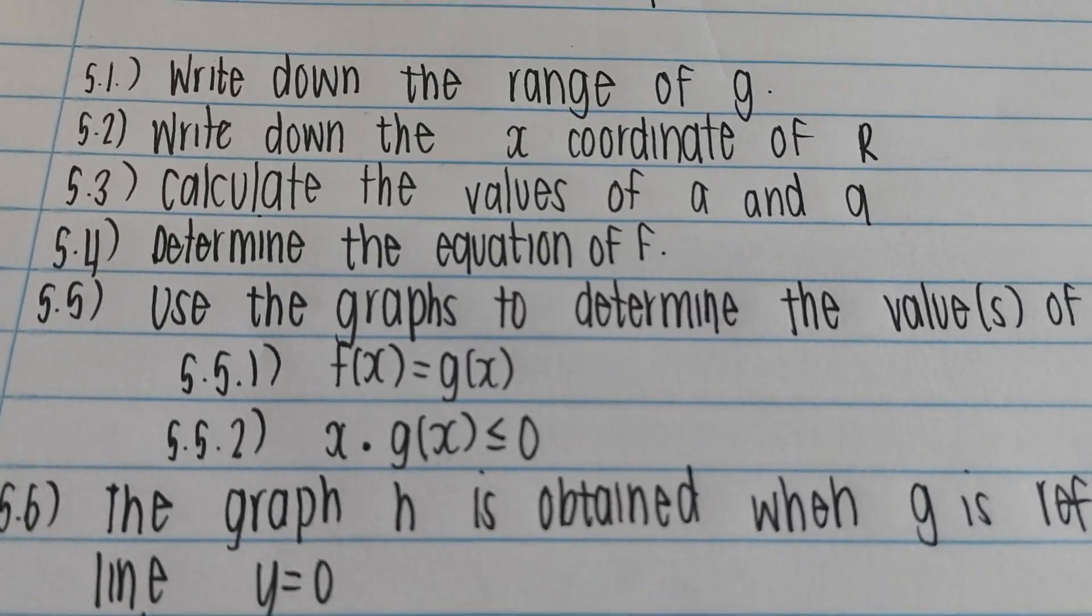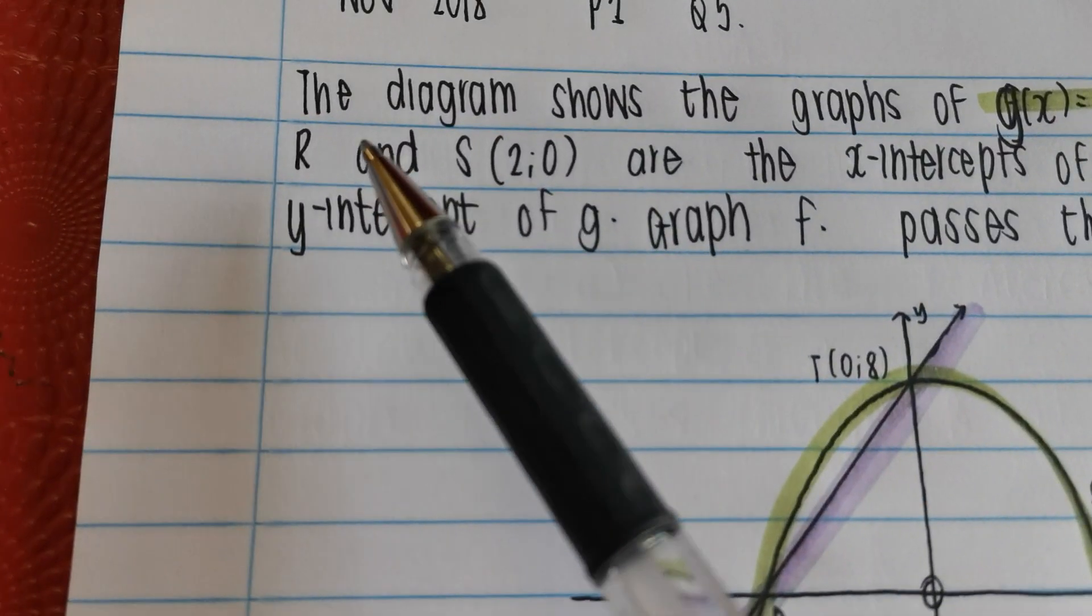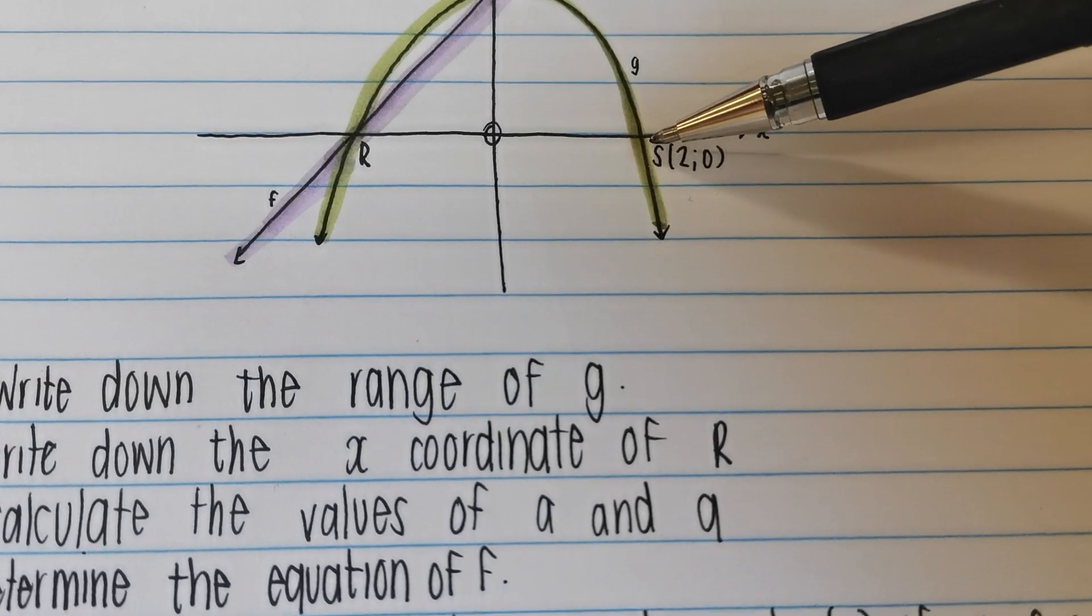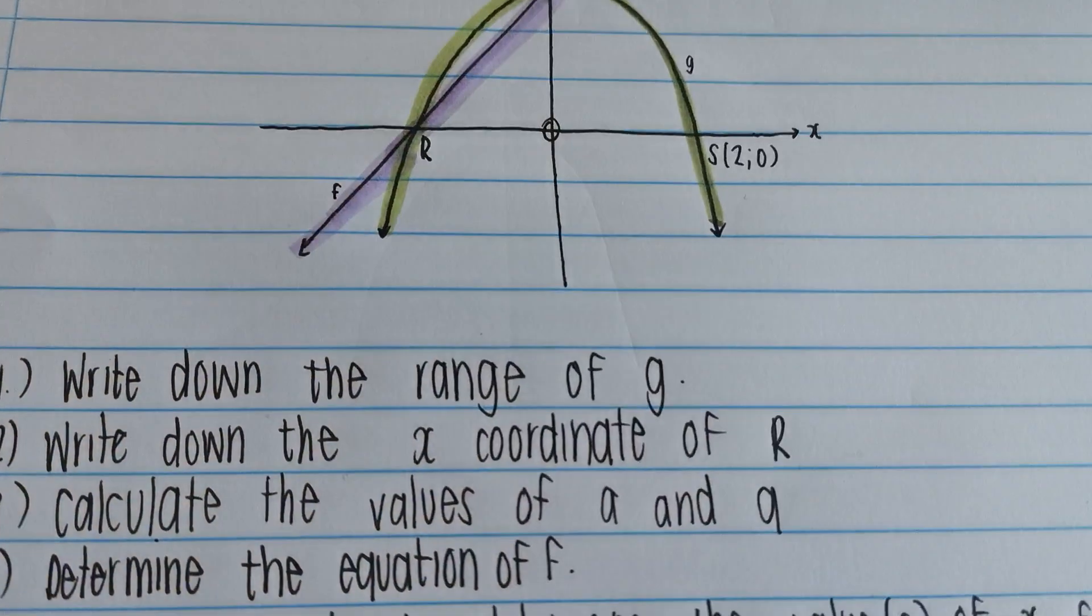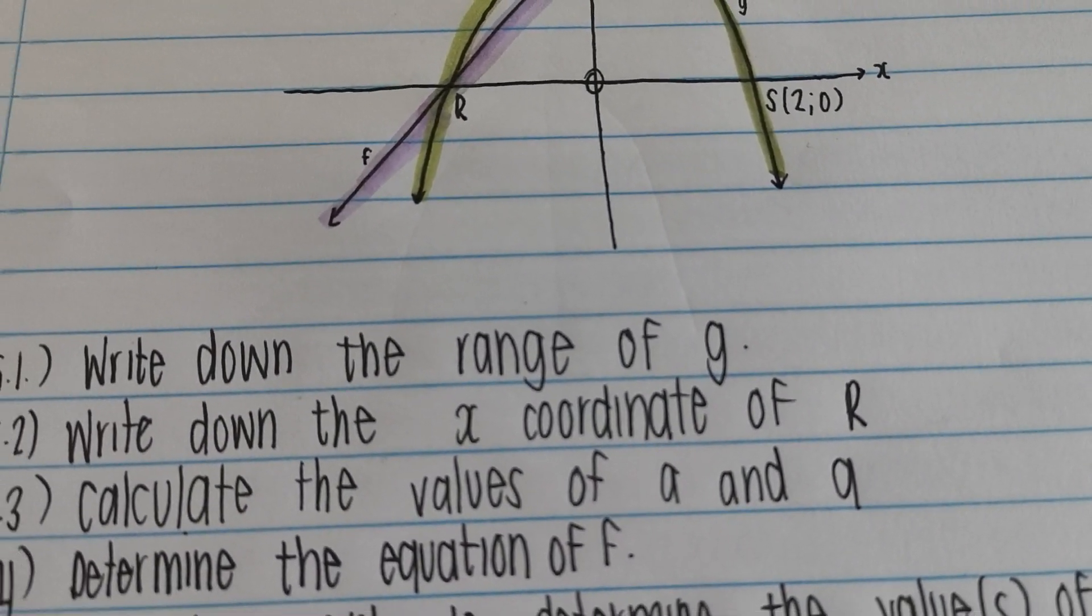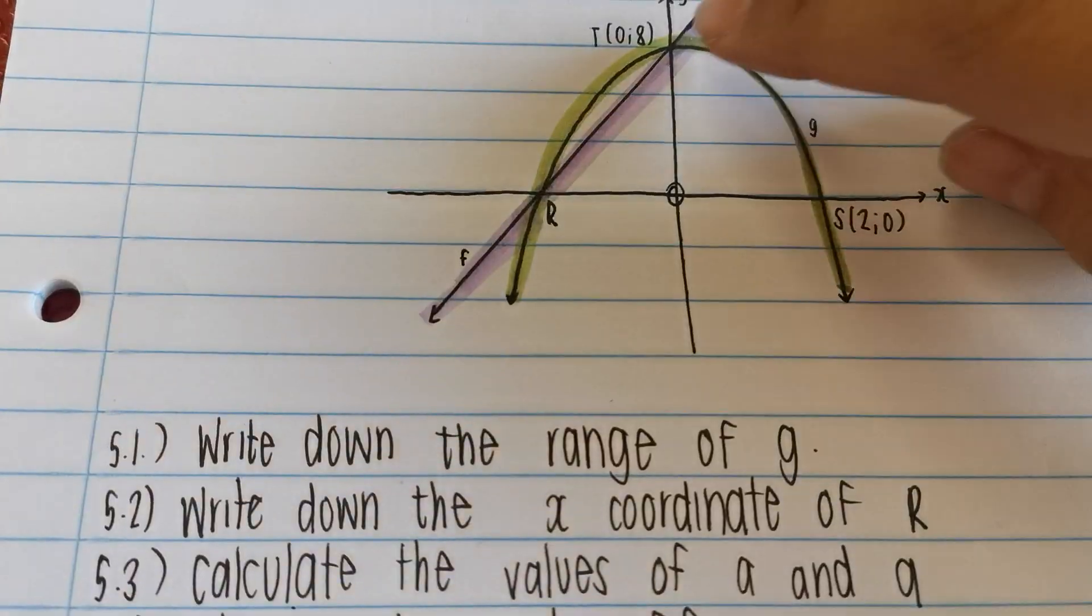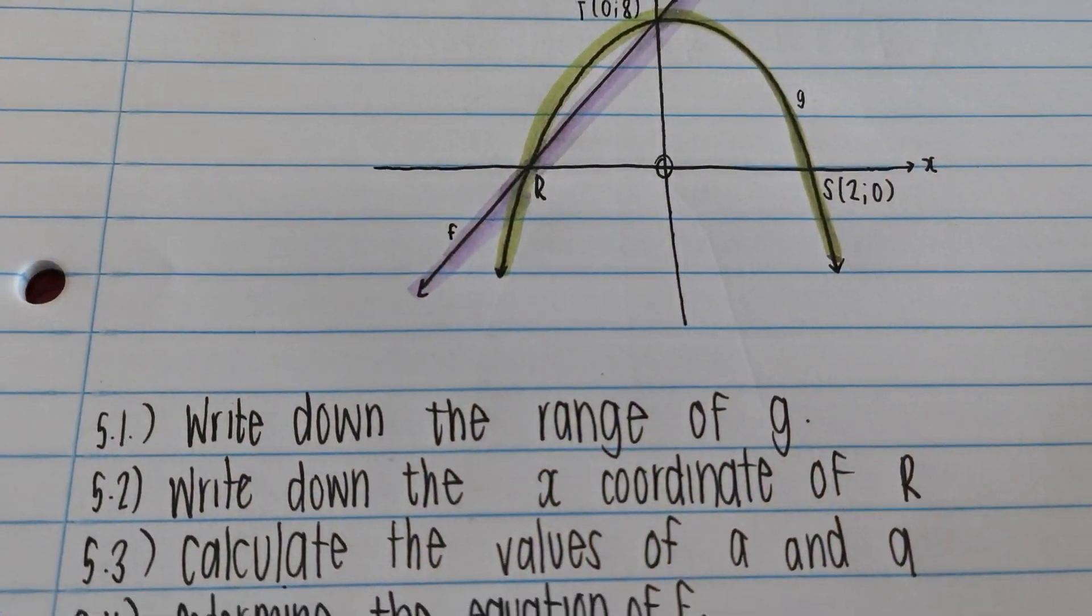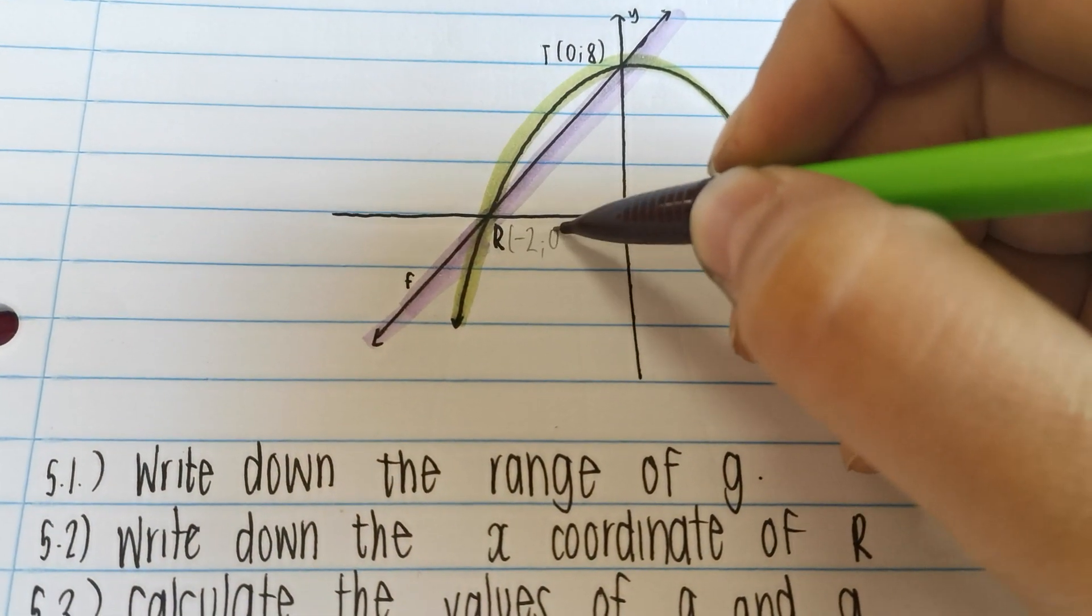Second question. Write down the x coordinate of r. Remember they told us that r and s are x-intercepts. So r is over here. If s is 2, what do you think the r value is going to be? Remember, this y-axis is basically our equation of our axis of symmetry. Meaning that this half of the graph that I have here has to be symmetrical to this half of the graph. That gives us a clue.